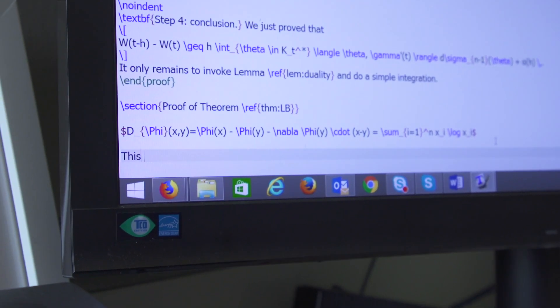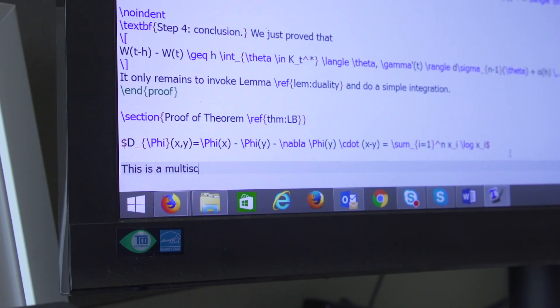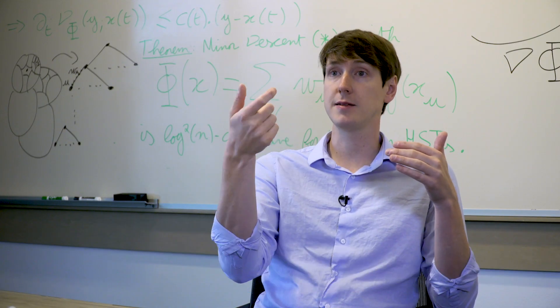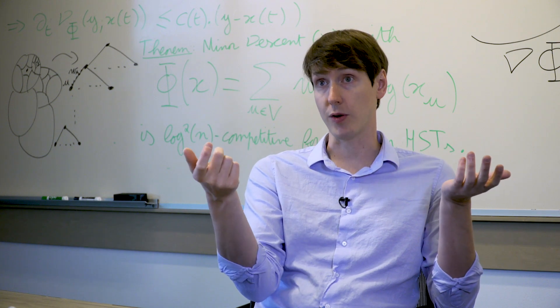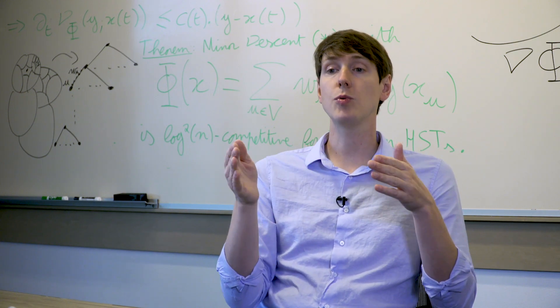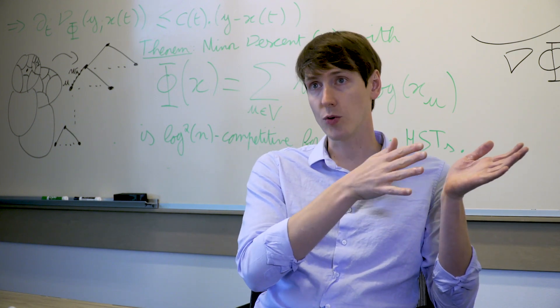Imagine that I'm running a website and my optimization variable is which ad to present. When the user comes, I can decide to present an ad and see whether that person clicks on it or not. But I don't know what would have happened if I had presented some other ad.